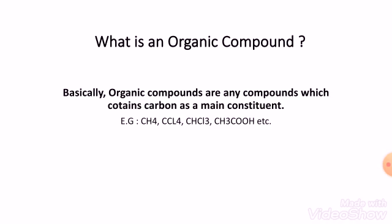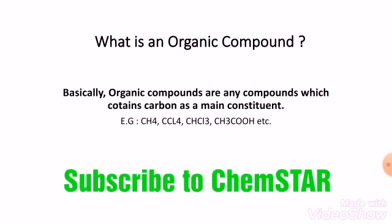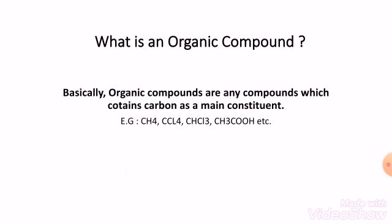Let's start with the basic part first: what is an organic compound? Organic compounds are any compounds which contain carbon as a main constituent. However, there is a modification to this definition — it is not that only carbon and hydrogen make a complete organic compound. Nitrogen, phosphorous, sulfur, hydrogen, and metals are also present in organic compounds.